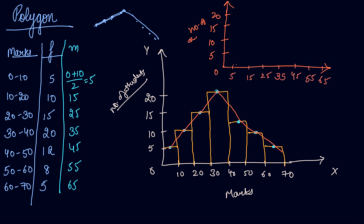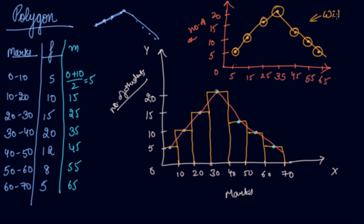Mark the points: at midpoint 5 the frequency is 5; at 15 the frequency is 10; at 25 the frequency is 15; at 35 the frequency is 20; at 45 the frequency is 12; at 55 the frequency is 8; at 65 the frequency is 5. Now draw the polygon using your pencil and scale — not freehand. In this way you can draw a polygon without histograms.